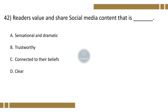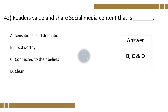Question 42. Readers value and share social media content that is: Option A: Sensational and Dramatic, B: Trustworthy, C: Connected to their beliefs, D: Clear. The correct option is B, C, and D.